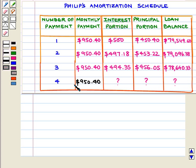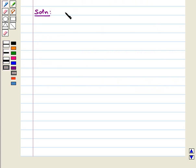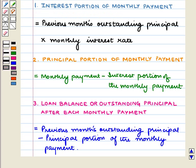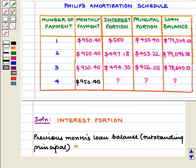So for the fourth payment also, this amount remains the same. Now we proceed to fill the remaining columns: the interest portion, the principal portion, and loan balance. First we find the interest portion. The formula for interest portion is previous month's outstanding principal into the monthly interest rate. Here, the previous month's loan balance or outstanding principal is equal to $78,640.33.